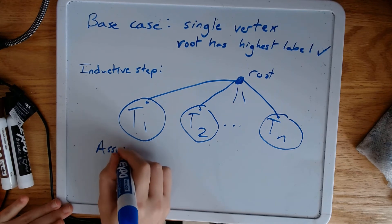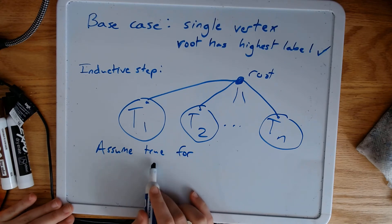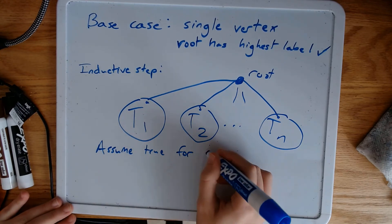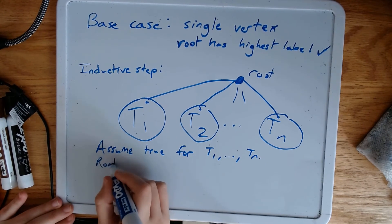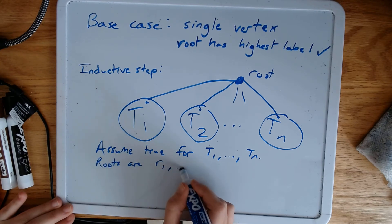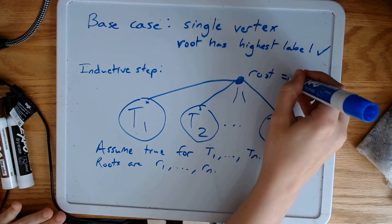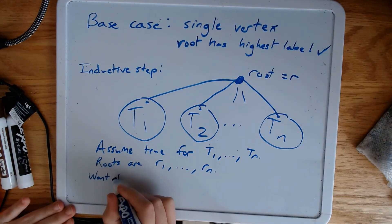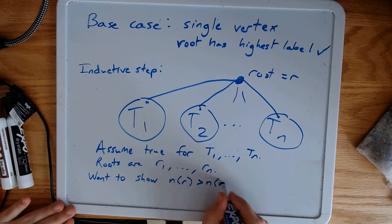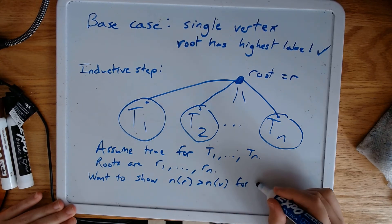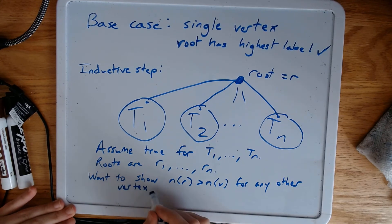So we assume true. We assume that our statement, that the root has the highest label, is true for all these trees that we're connecting. So let's say they have roots r1 through rn, just so that we have names for them. And this root we're going to call r. So we want to show that n of r is greater than n of v for any other vertex v.